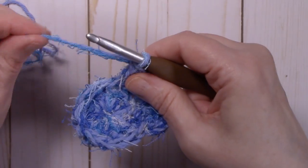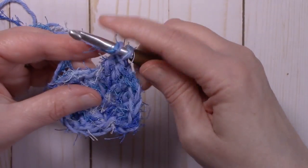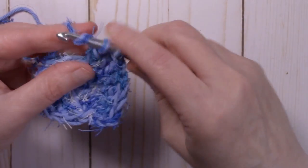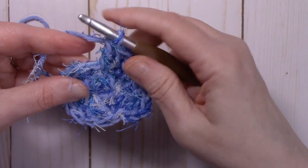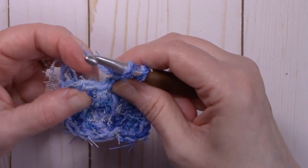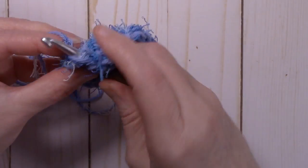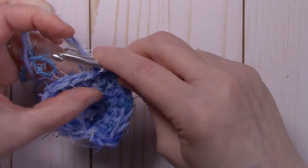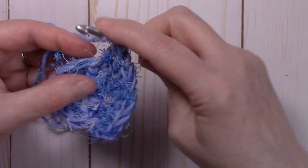We're going to continue working two double crochets into each stitch around. Make sure you're grabbing both yarns when you're working your double crochets, the scrubby yarn and the cotton yarn. So again, keep working those two double crochets in each stitch. And I'll meet back up with you at the end of this round.